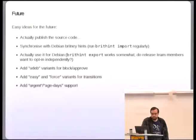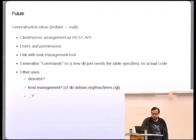So ideas for the future - I'd obviously like to actually publish the source code. I've started synchronizing with the Brittany hints, but that's only been for a few days so it's only been a few auto-removals that I've got there which isn't terribly interesting. Obviously this is a pitch to the release team to see if they want to try and use it. Currently missing is easy and forced transitions, you-deb-in block, you-deb and unblock you-deb variants which I don't think actually do anything different to regular block and unblock, and urgent and age days. Ideally I'd love to generalize this more obviously, and there we go, yes.